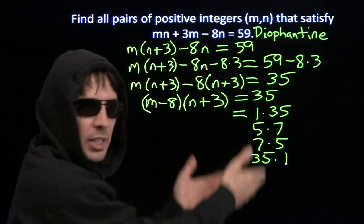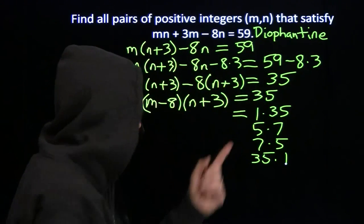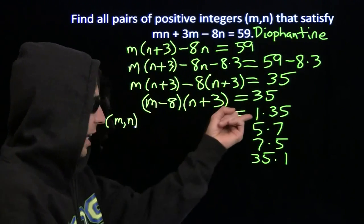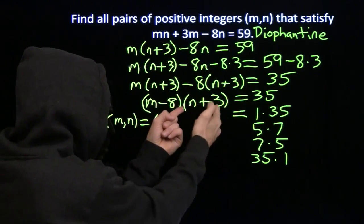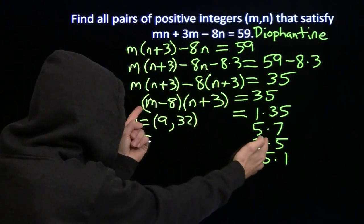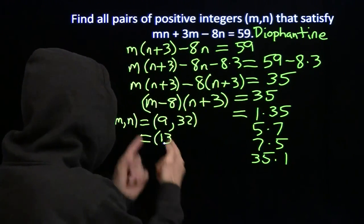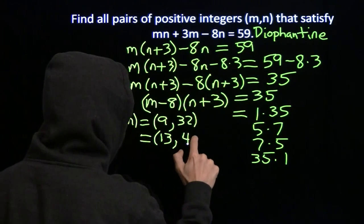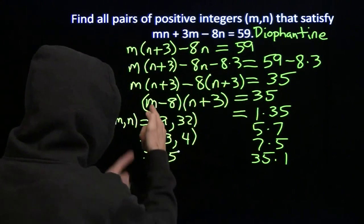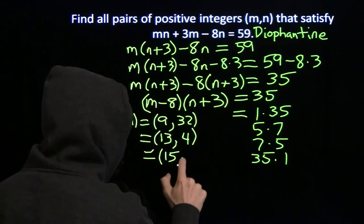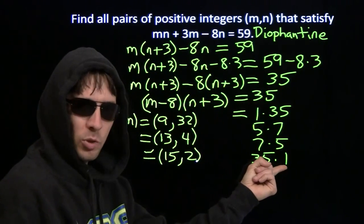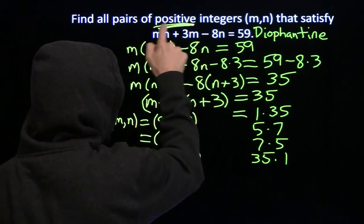Now we'll look at each one of these possibilities, and we'll figure out what values of m and n go with each. So for the first one here, 1 and 35, well, if m minus 8 is 1, that means m is 9. If n plus 3 is 35, that tells us n is 32. Come down here, m minus 8 is 5, that gives us 13 for m. And then n plus 3 is 7, that gives us 4 for n. And then onto this one, m minus 8 is 7, that gives us 15 for m. n plus 3 is 5, that gives us just 2 for n. And finally, this last one, well, m minus 8 is 35, that gives us 43 for m, but n plus 3 equals 1, that makes n negative 2. Read the question. Positive integers.